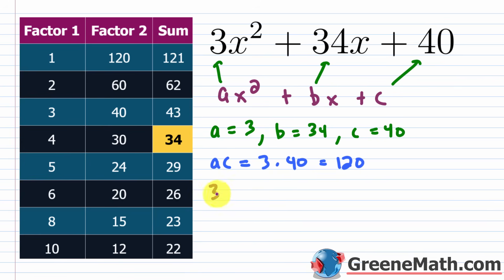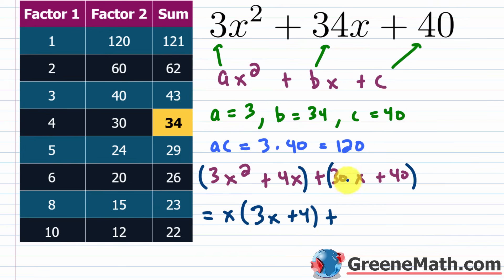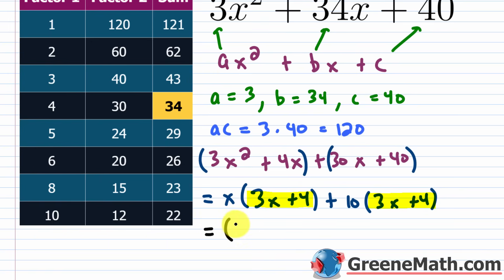Rewrite as 3x² + 4x + 30x + 40, then factor by grouping. From the first two terms pull out an x: x(3x + 4). From the last two pull out a 10: 10(3x + 4). Since 3x + 4 is a common binomial factor, factor it out to get (3x + 4)(x + 10).